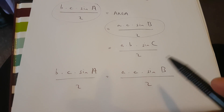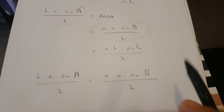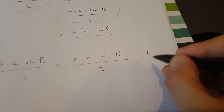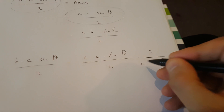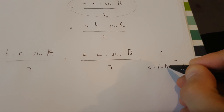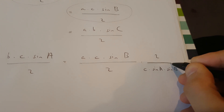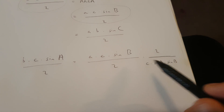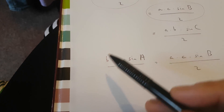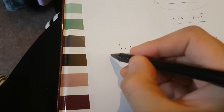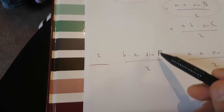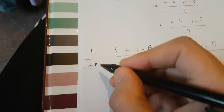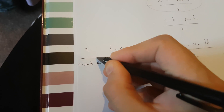Now that we've got this, we need to multiply both sides of this equation by an expression. That expression turns out to be 2 over c, multiplied by sin(A), multiplied by sin(B). Since we're multiplying this side of the equation by this, we've got to do the same to the other side — multiplying by 2 over c times sin(A) times sin(B).